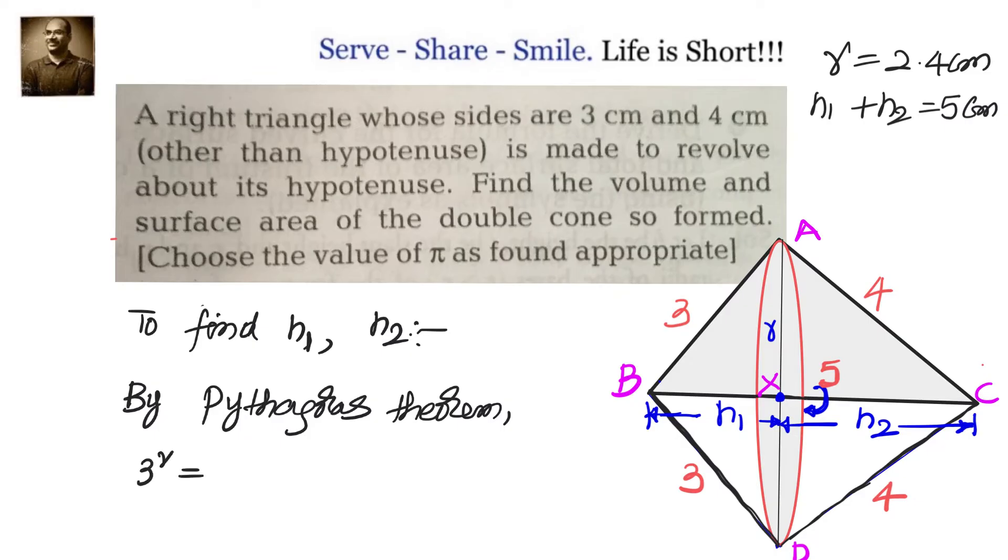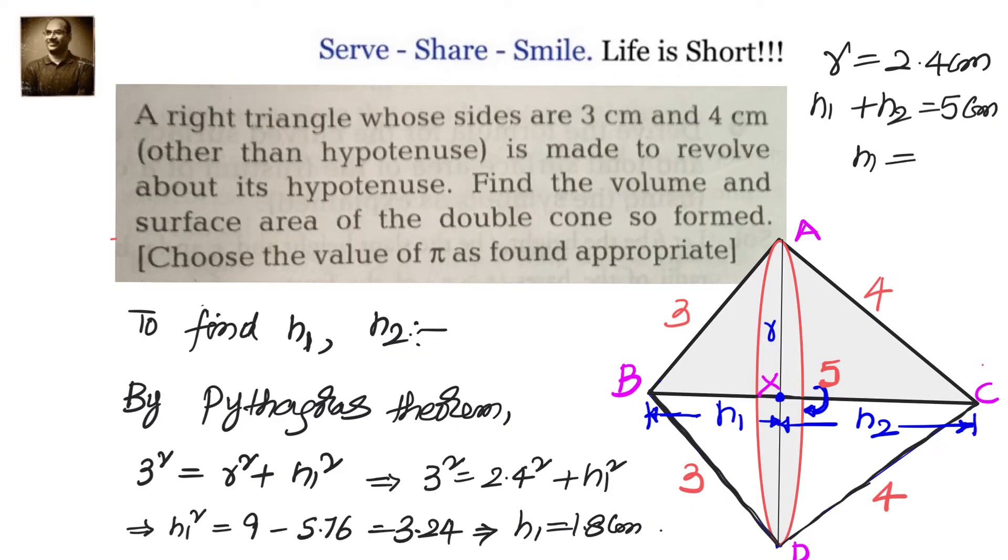We can say that 3² = r² + h₁². So we know r value as 2.4. So we can go ahead and write down 3² = 2.4² + h₁² or h₁² = 9 - 5.76 which equals 3.24, that gives us h₁ = 1.8. Once we got h₁ = 1.8 we can easily calculate h₂ as 3.2 centimeters because we know h₁ + h₂ is the hypotenuse of the triangle that is 5 centimeters.